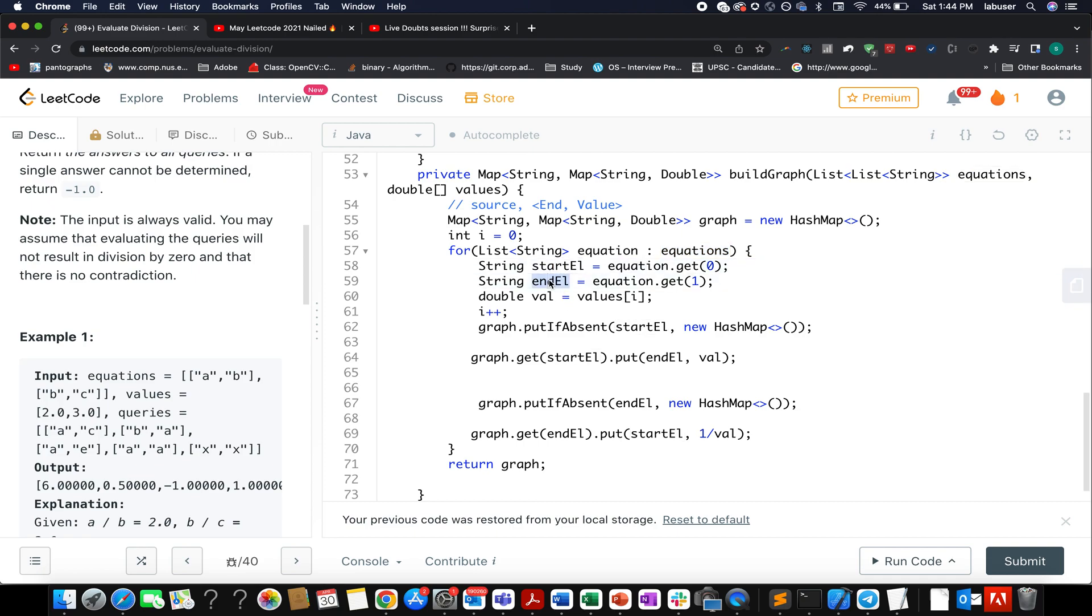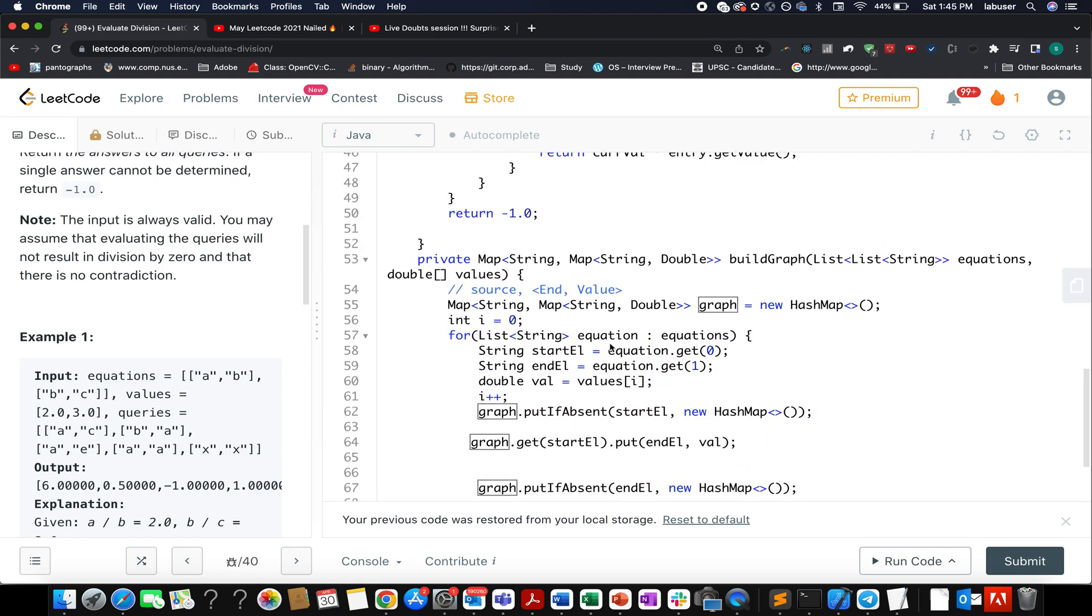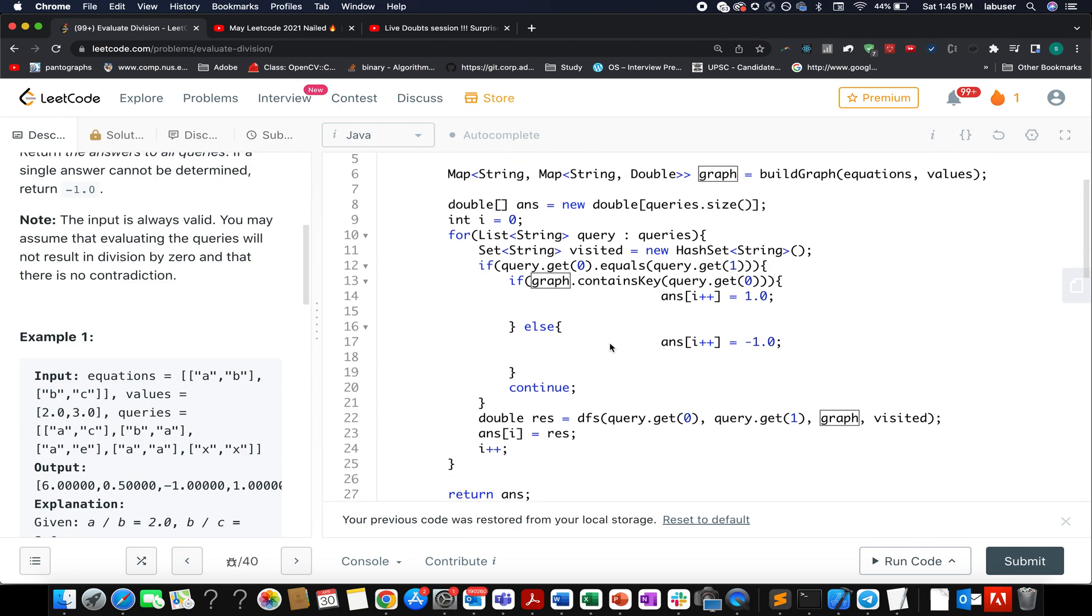This is my source or start comma map will have end comma value. Now let's start the iteration. You traverse over the equations, extract the starting element, extract the ending element, extract the value element, and add it to the graph. One connection is from start to end with value val. The other connection is from end to start with value 1/val. Once done, return this graph back to the caller method.